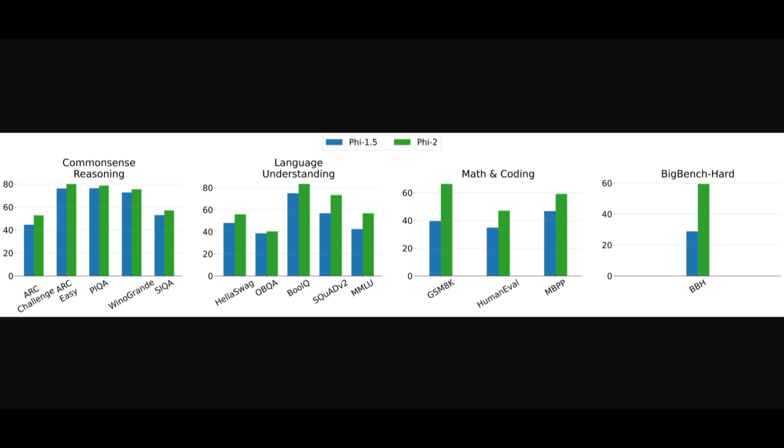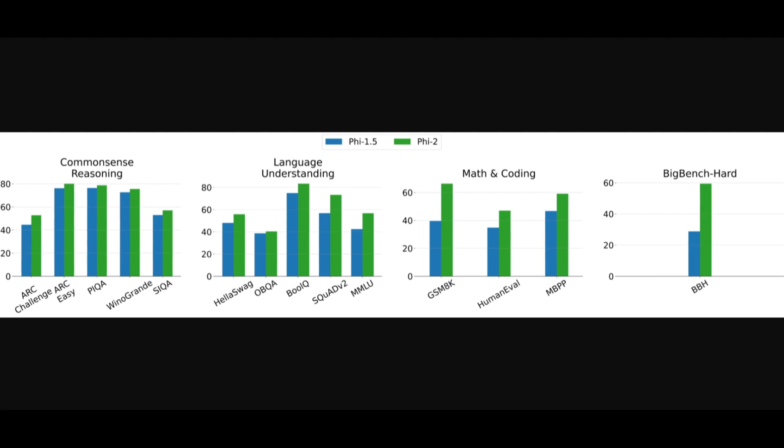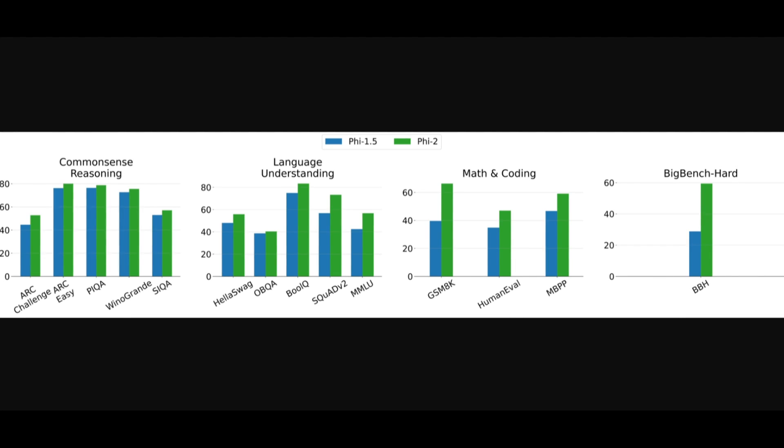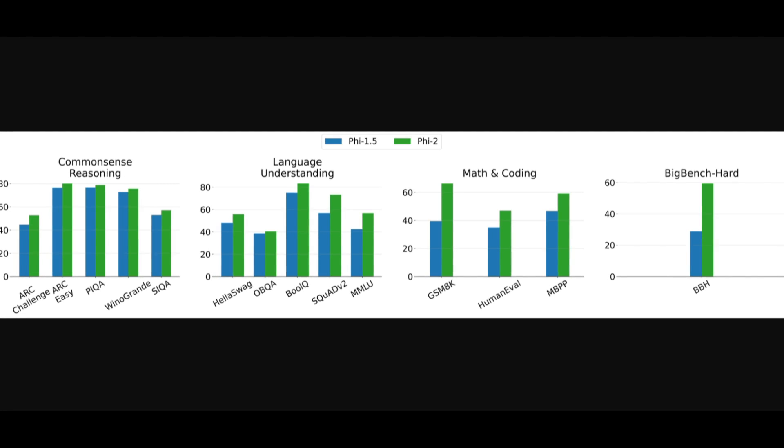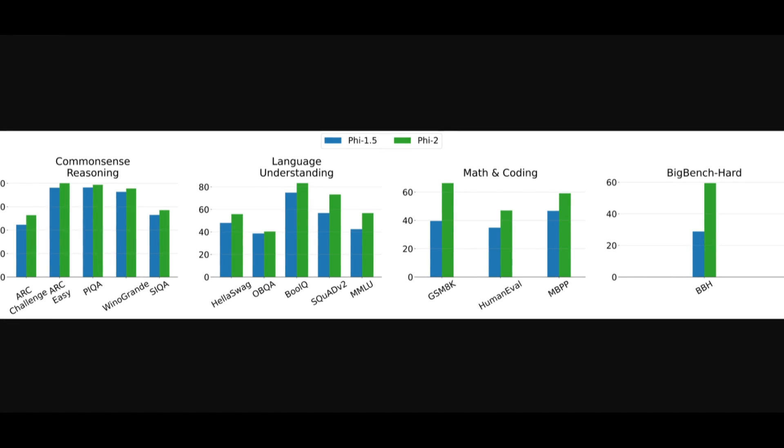Secondly, they worked on innovative scaling techniques. The team used innovative techniques to scale up their Phi-2 model from the 1.3 billion parameter Phi-1.5 model. They transferred the knowledge from that model to the new one, accelerating training and significantly boosting the benchmark scores from this whole innovative scaling technique.